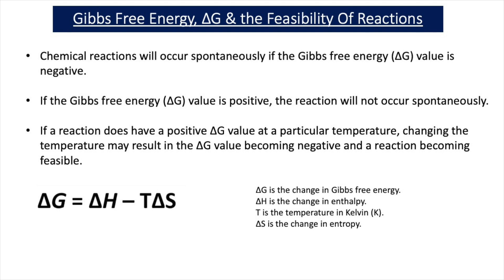Enthalpy changes are normally expressed in kilojoules per mole, and entropy changes are normally expressed in joules per Kelvin per mole. So when you use this equation, it's really important that the energy units for delta H and delta S are the same. What normally happens is that you convert the delta S value from joules per Kelvin per mole to kilojoules per Kelvin per mole by dividing by 1000, so the energy units will both be kilojoules.